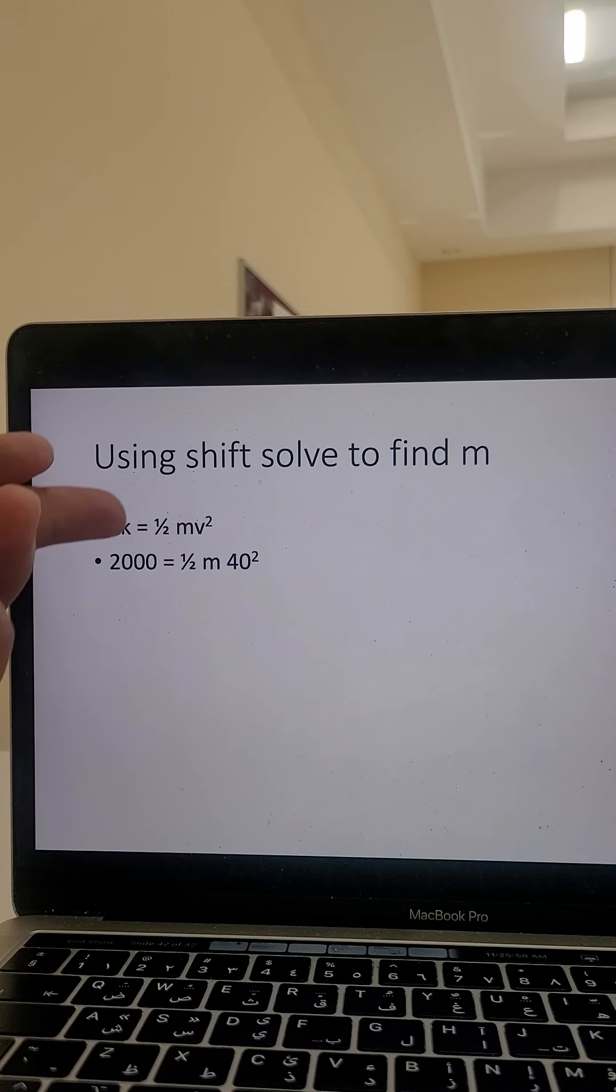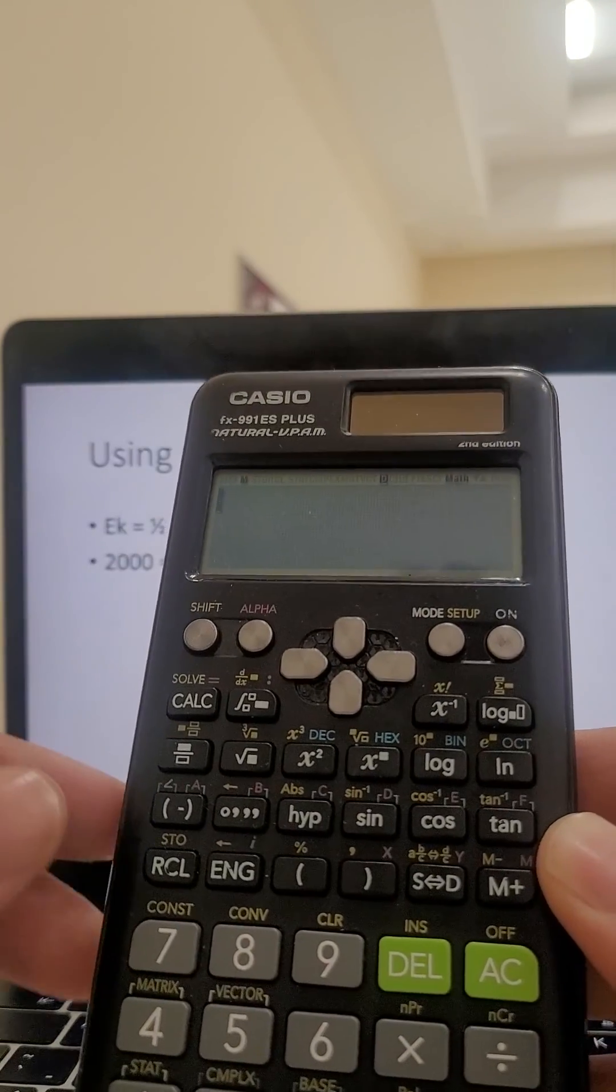So our formula is EK equals a half mv squared. I want to find m. I don't need to rearrange the formula. I can put it straight into the calculator like this.